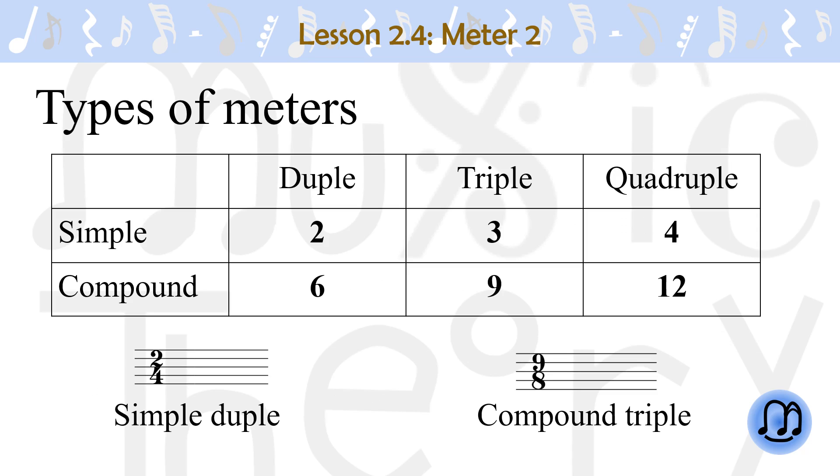Types of meters. The table shows how meters are categorized. If the top number is a 2, 3, or 4, the meter is simple. If the top number is a 6, 9, or 12, the meter is compound.